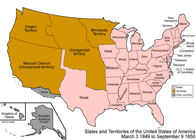The Compromise of 1850 was formally proposed by Clay and guided to passage by Douglas over Northern Whig and Southern Democrat opposition. It was enacted September 1850 with the following terms: California admitted as a free state; Utah Territory and New Mexico Territory organized with slavery to be decided by popular sovereignty; Texas dropped its claim to land north of the 32nd parallel north and west of the 103rd meridian west in favor of New Mexico Territory.